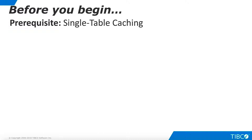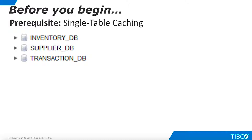To use this demo you must have a working knowledge of single-table database caching; a demo-at on that topic is available. This demo requires significant setup. Revised users can access a CAR file and data files from the demo-at repository. We use three physical data sources — inventory, supplier, and transaction — each an Excel spreadsheet, making inserts, updates, and deletes very simple. We use tiny data sets to make it easier to see the results of our changes.